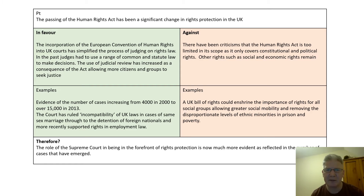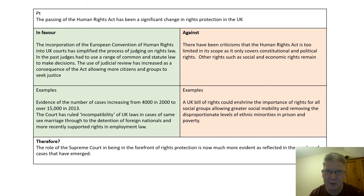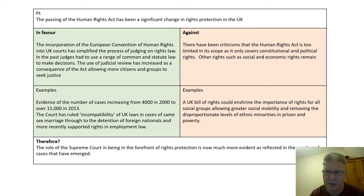Our first assertion: passing the Human Rights Act in 2000 has been significant in rights protection in the UK. The incorporation of the European Convention of Human Rights into UK courts has simplified the process of judging on rights law. In the past, judges would have had to use statute or common law. As a result, judicial review has increased as more citizens and groups have been willing to use it — the evidence is stark, with cases rising from 4,000 to over 15,000 by 2013. The range of cases is also interesting, from same-sex marriage through detention of foreign nationals to the Uber case on employment law.